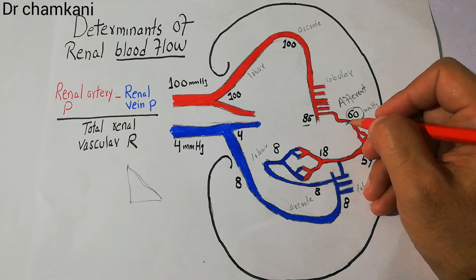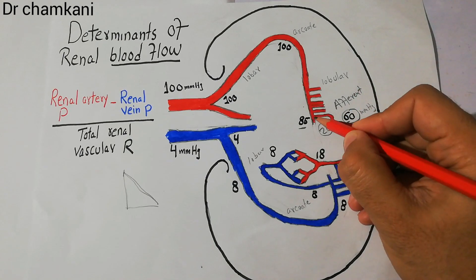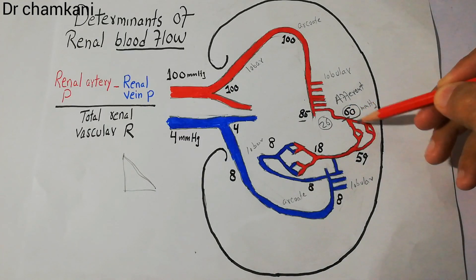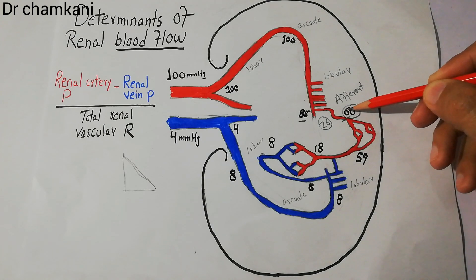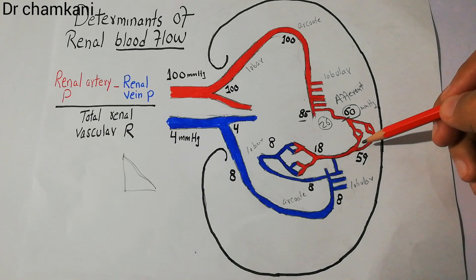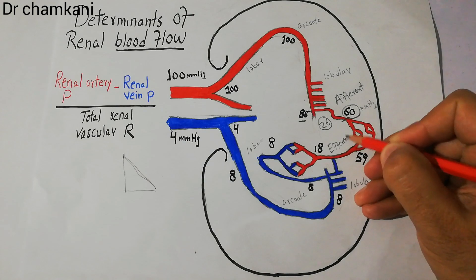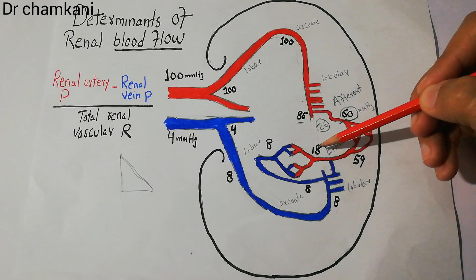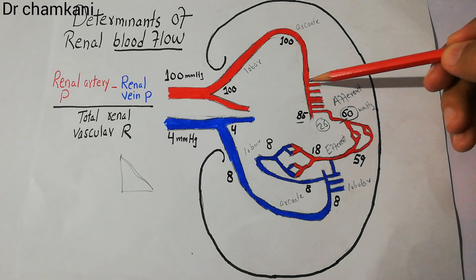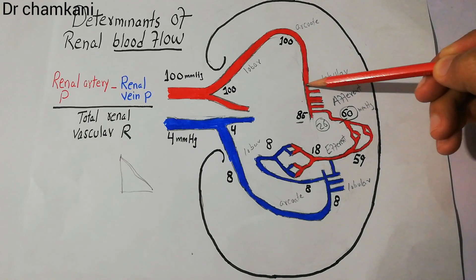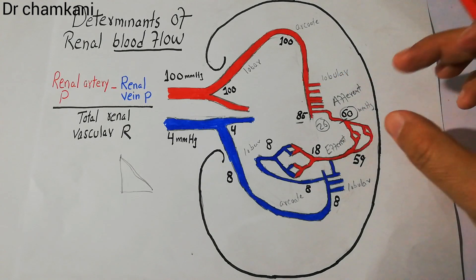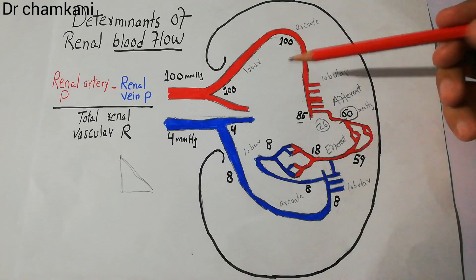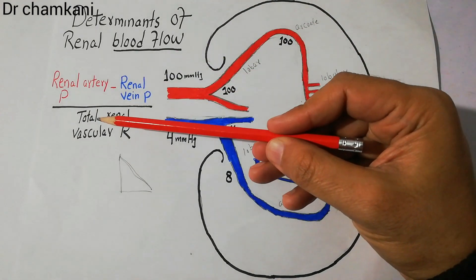There is a big decrease of around 26 mmHg across the afferent arteriole. Blood then enters the glomerular capillaries, where pressure is around 60 mmHg at the start and 59 mmHg at the end. In the efferent arteriole, pressure starts at 59 mmHg and drops to 18 mmHg at the end. The biggest decreases in arterial pressure inside the kidney occur across the interlobular arteries, afferent arteriole, and efferent arteriole — these represent the highest resistance zones contributing most to total renal vascular resistance.